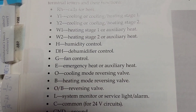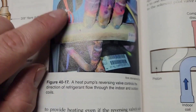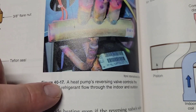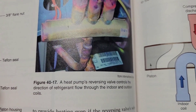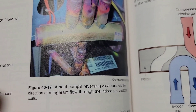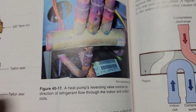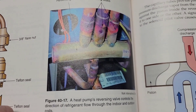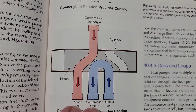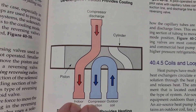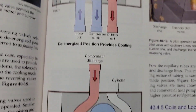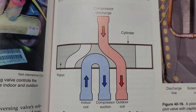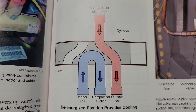Or energizing in heating. For this particular unit, it was B and it was energizing in heating. Here is a picture of the reversing valve. A heat pump's reversing valve controls the direction of refrigerant flow through the indoor and the outdoor coils.